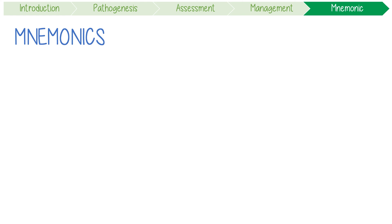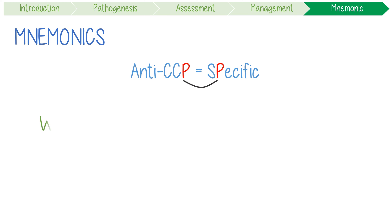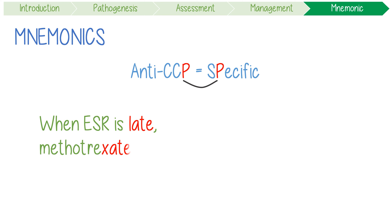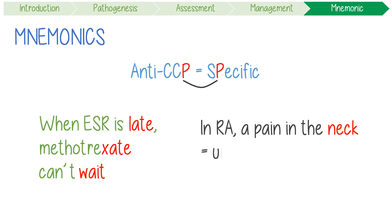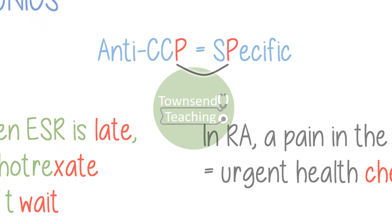Use these mnemonics to help remember some key points about RA. Anti-CCP is the more specific test because they both have P's. When ESR's prolonged and late, methotrexate can't wait. A pain in the neck needs an urgent health check. Thanks for watching.